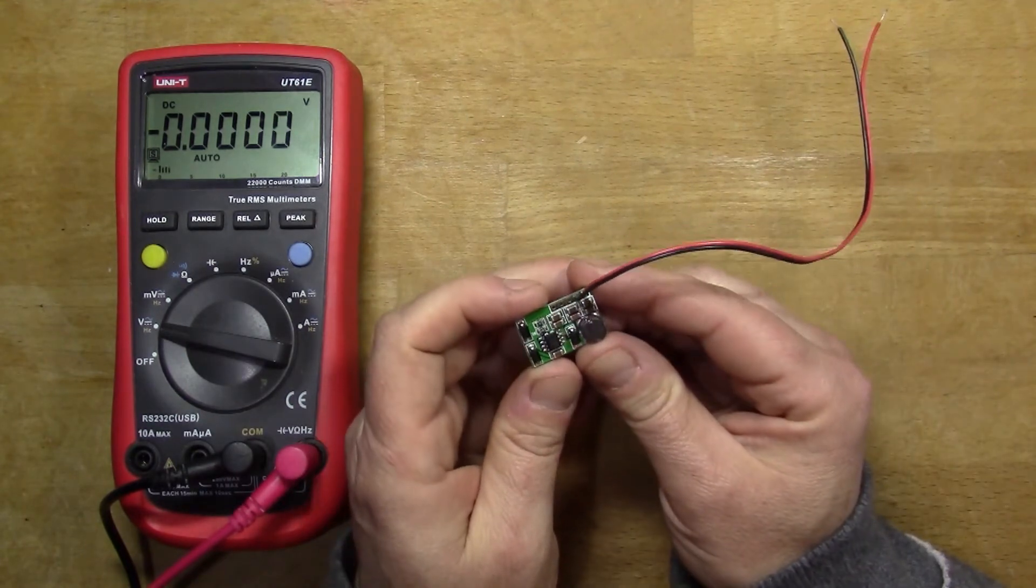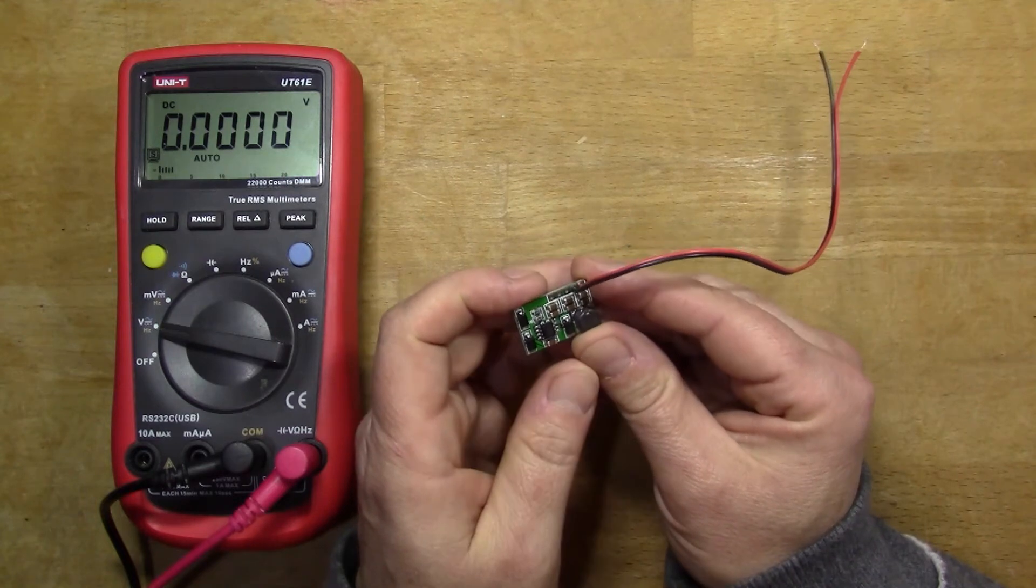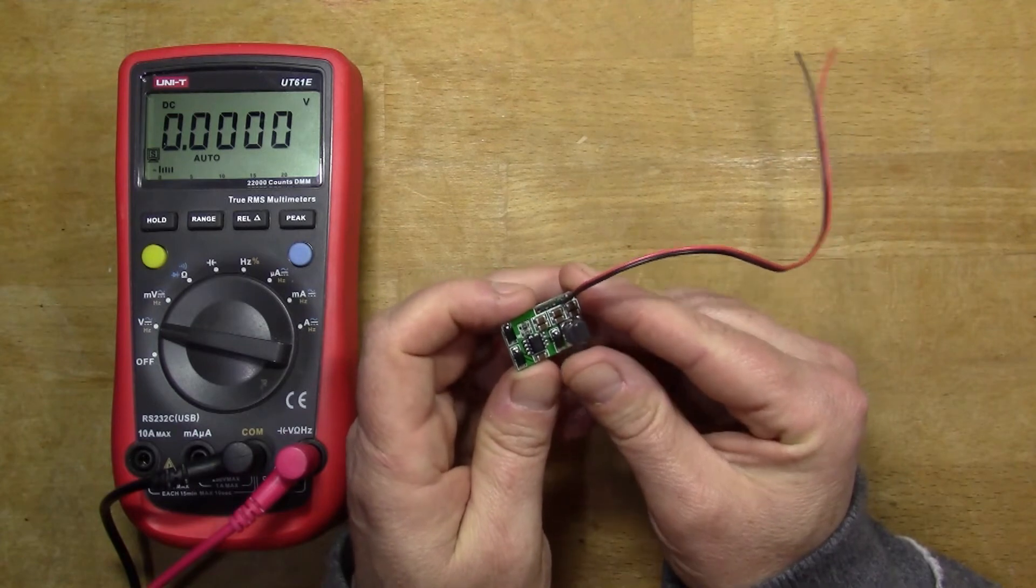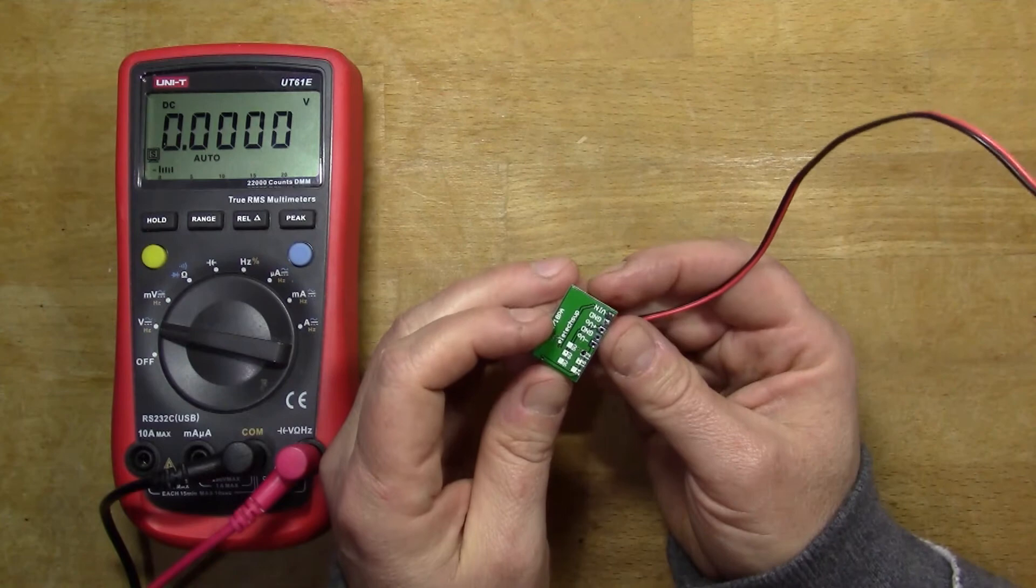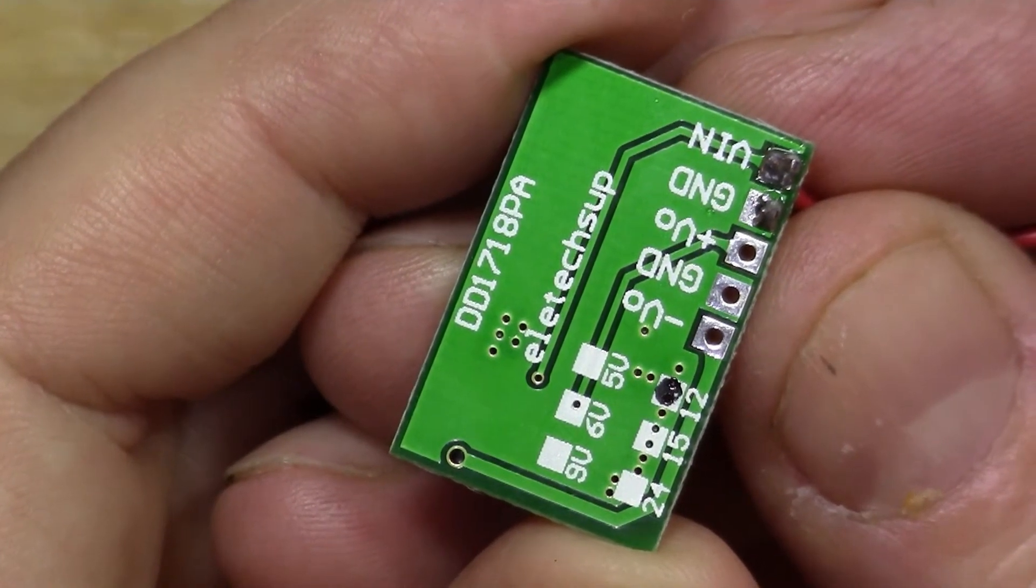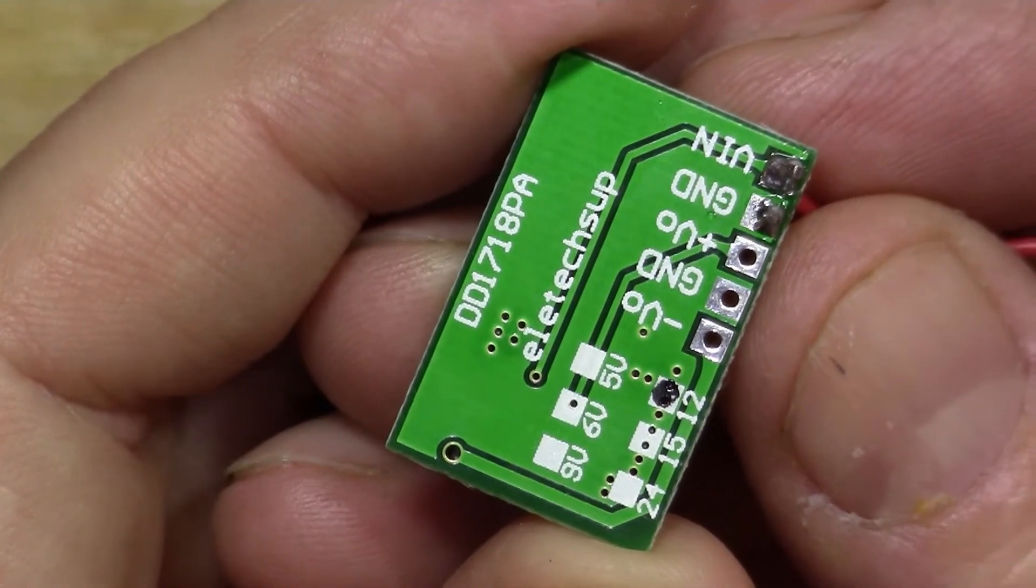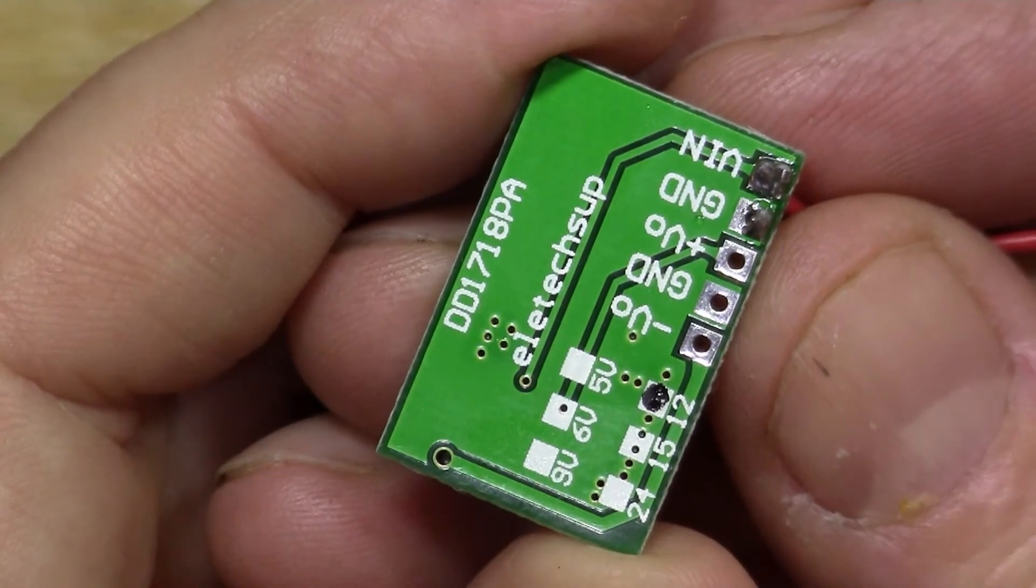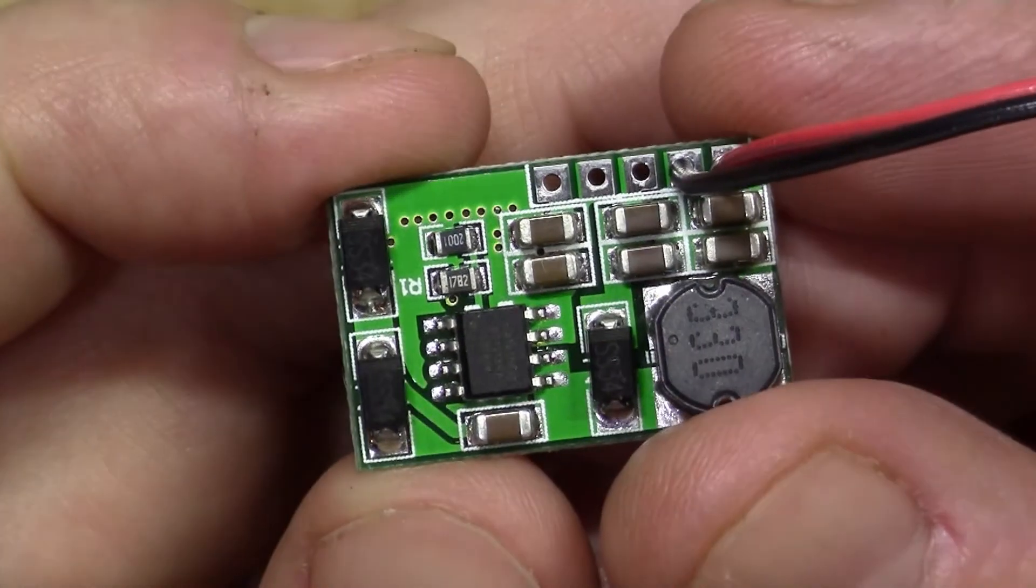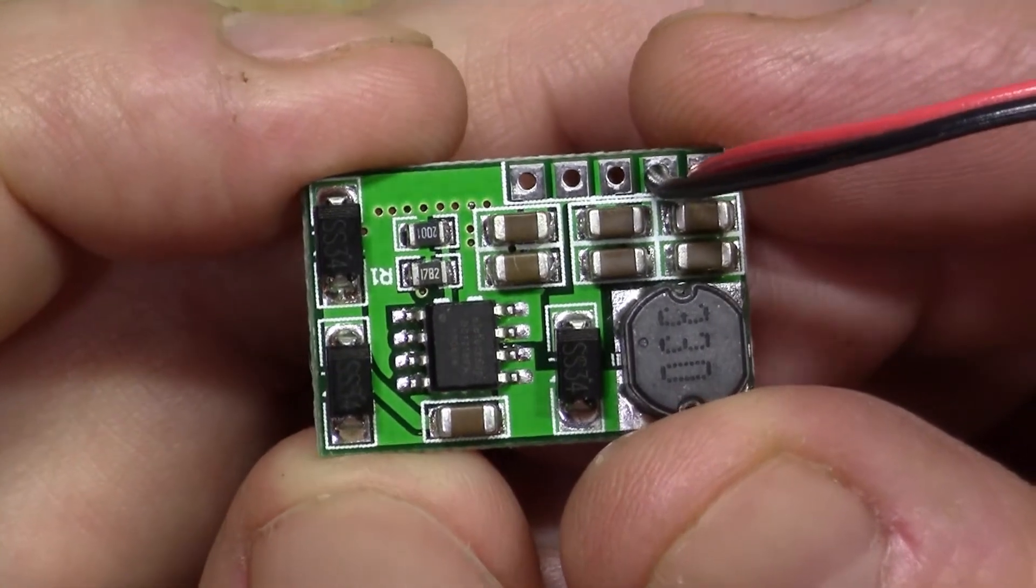This board takes five volts in and outputs plus 12 volts and minus 12 volts. I'm not quite sure from the specification how much current this can supply on those split rails, probably not that much.